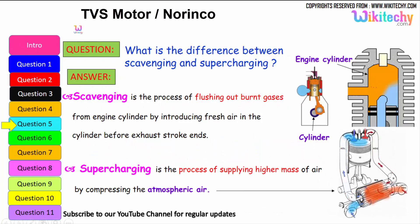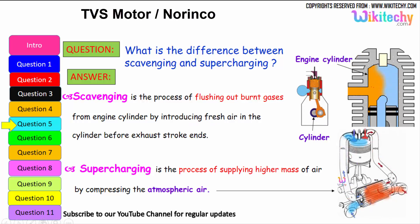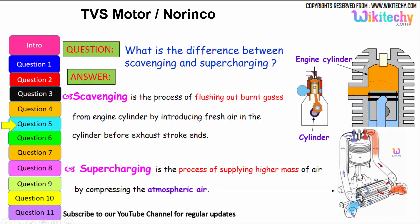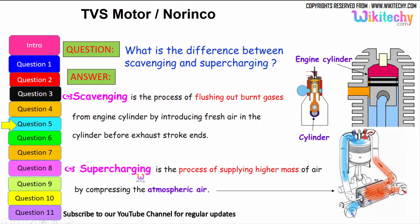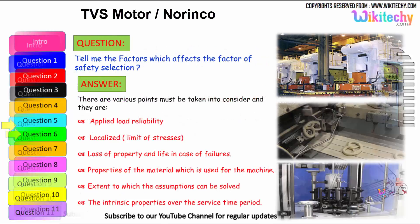What is the difference between scavenging and supercharging? Scavenging is the process of flushing out burnt gases from the engine cylinder by introducing fresh air before the exhaust stroke ends. Supercharging is the process of supplying high-density masses of air by compressing it above atmospheric pressure — a high pressure of air is injected into the cylinder.